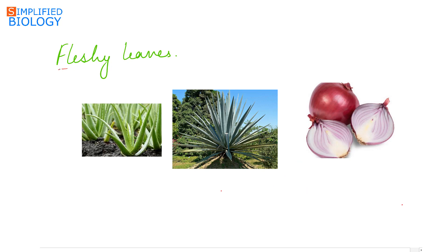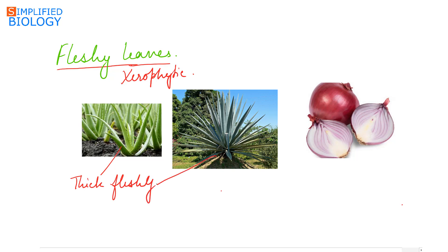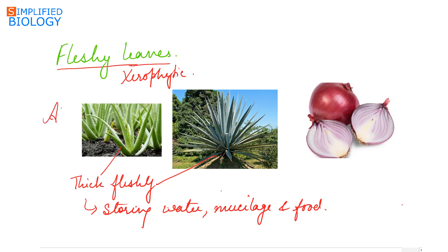Last, fleshy leaves. In some xerophytic plants, the leaves become thick and fleshy, storing water, mucilage, and even food. Examples include Aloe, Agave, and even onion — in the onion bulb, fleshy leaves are seen.